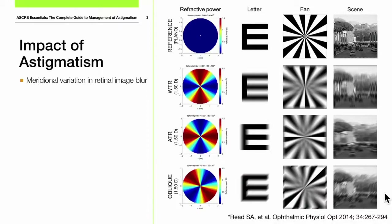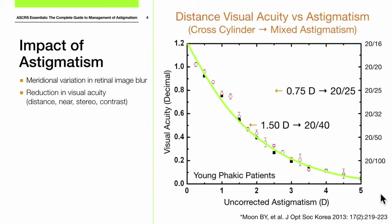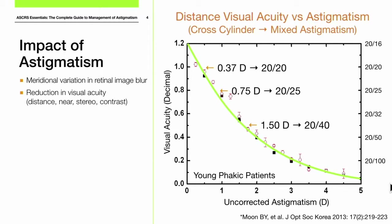Astigmatism causes meridional variation in retinal image blur, which produces a subsequent reduction in visual acuity — distance and near — and also in stereo and contrast acuity. One question I always have is: what visual acuity can I expect for a certain level of astigmatism? With mixed astigmatism, we can maintain 20/20 acuity with up to about three-eighths of a diopter, 20/25 acuity at about three-quarters of a diopter, and we drop to about 20/40 at about a diopter and a half.